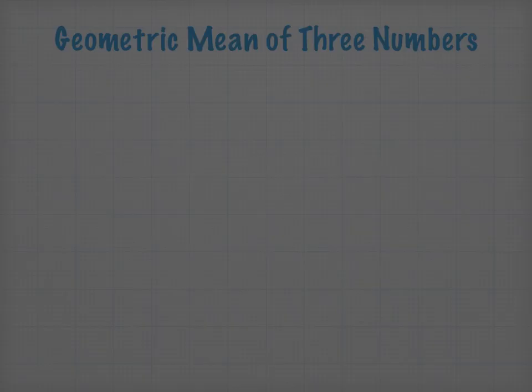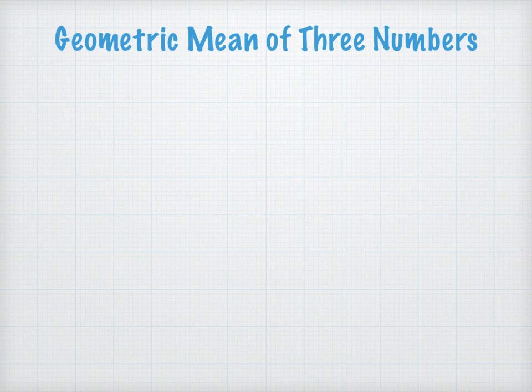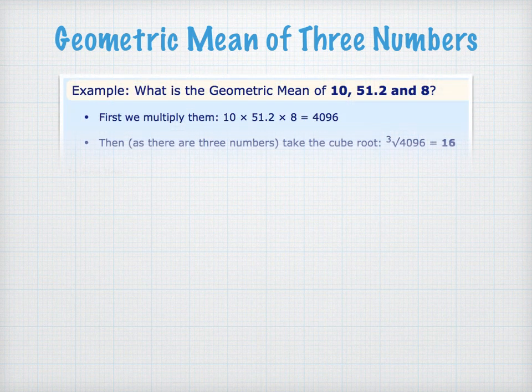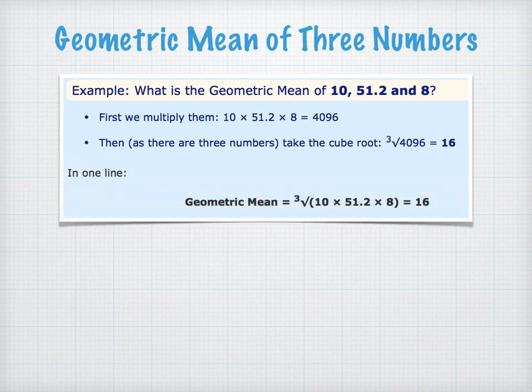Let's think about the geometric mean of three numbers. Remember we're going to multiply the three numbers together and then take the cube root. So the geometric mean of 10, 51.2, and 8 — we multiply the three numbers and get 4096 and then take the cube root. Notice that the geometric mean is somewhere between the smallest and the biggest number.